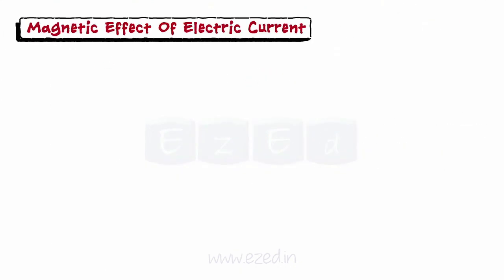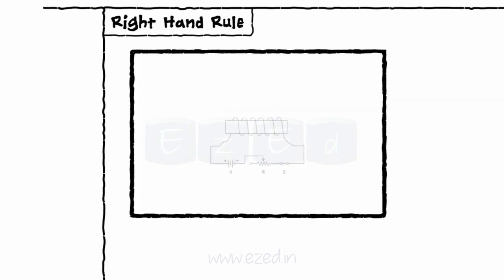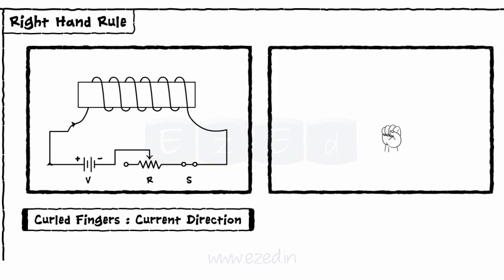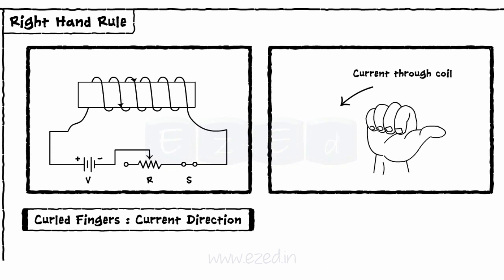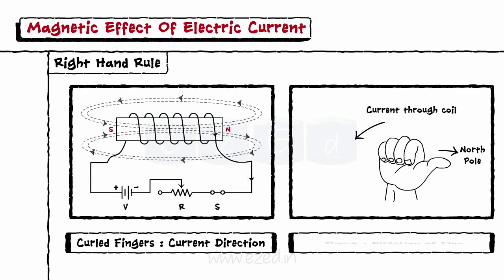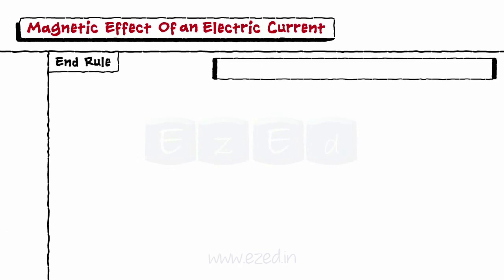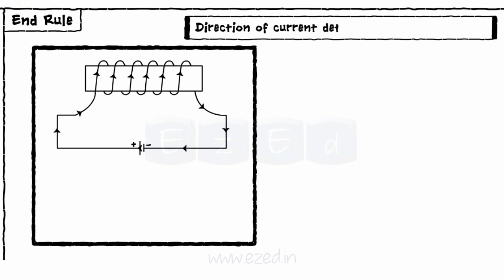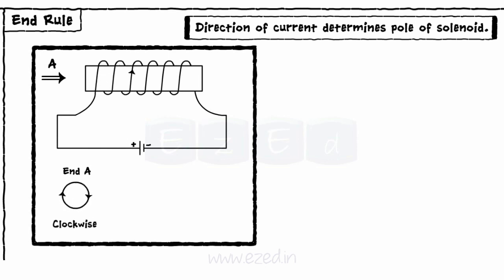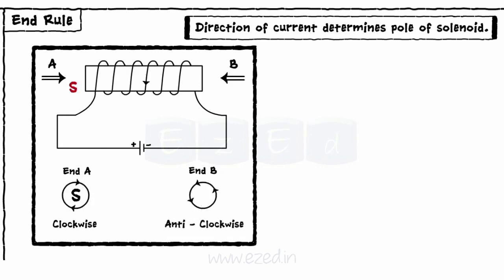The direction of the current and the magnetic field is given by the right-hand rule. It states that hold the solenoid in the right hand such that curled fingers point in the direction of the current through the coil. Then, the outstretched thumb along the axis of the solenoid points to the north pole of the solenoid, or points in the direction of the flux lines inside the solenoid. If the solenoid is observed from any one end, its polarity can be decided by the direction of the current. If seen from end A, the current flows in the clockwise direction, so end A behaves as the south pole. If seen from end B, the current flows in the anti-clockwise direction, so end B acts as a north pole.